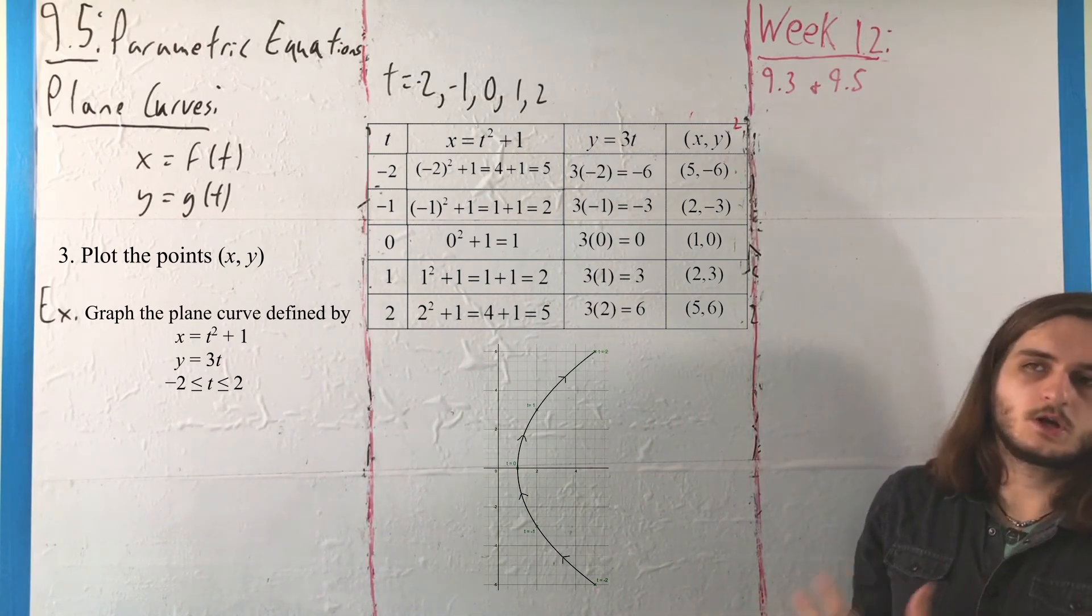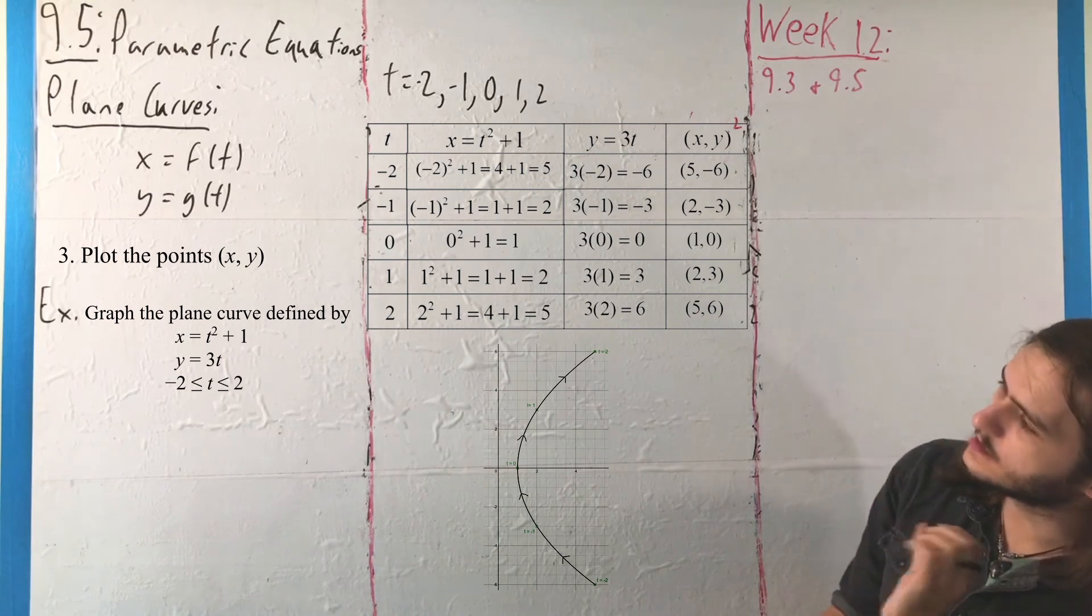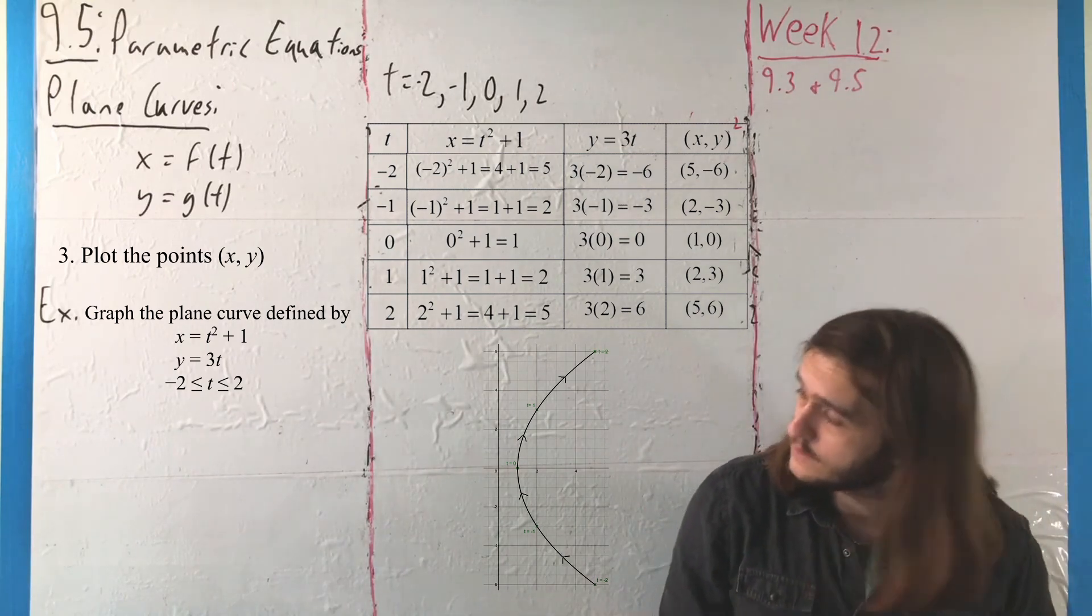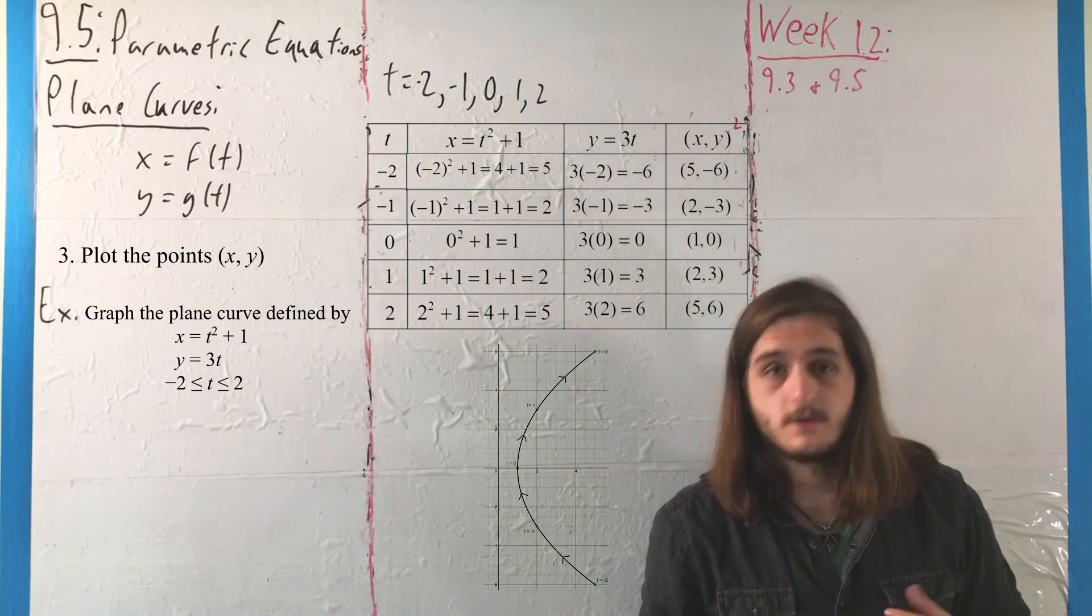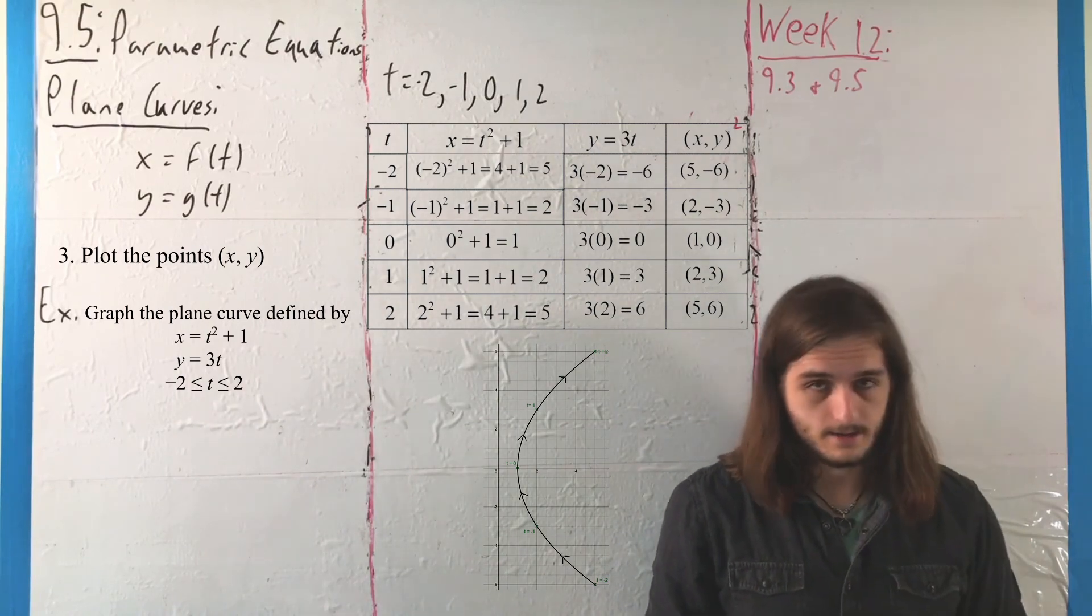Next, we're going to talk about how we can see these relationships in terms of just the x and y relationship that's sort of hidden beneath the surface, with a process called eliminating the parameter.